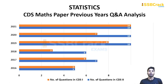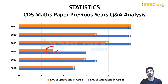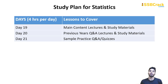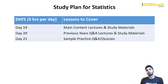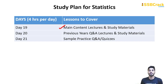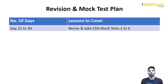The next topic is Statistics. The minimum number of questions asked is 3 and the maximum is 10. You have to devote three days to it: Day 19, Day 20, and Day 21, giving four hours per day. During this period you will cover main concepts, previous year questions, and sample practice. This covers all seven topics in the first 21 days.